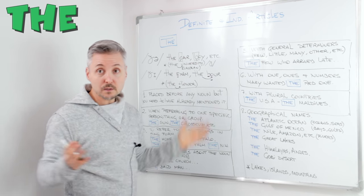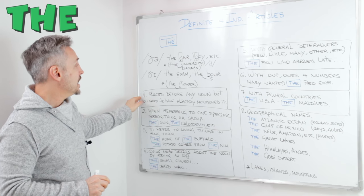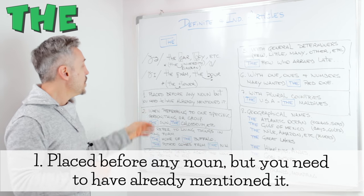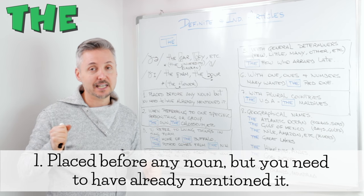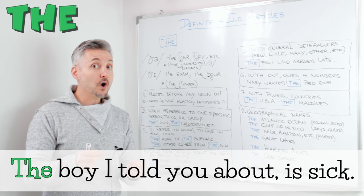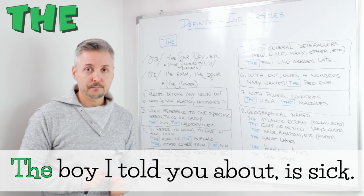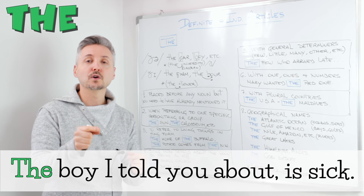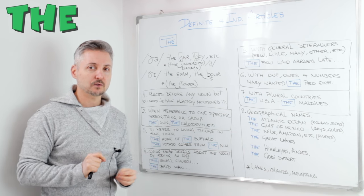I have eight rules that we're going to talk about. The first one: you can place the definite article 'the' with any noun, but you need to have already mentioned it. For example, 'the boy I told you about is sick.' The other person knows who I'm talking about — the boy I talked about.